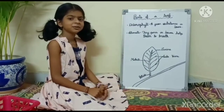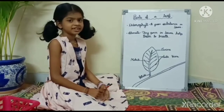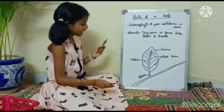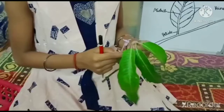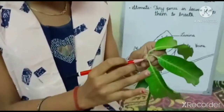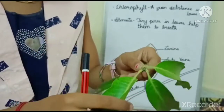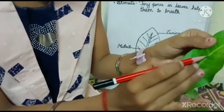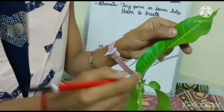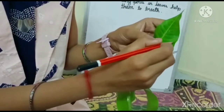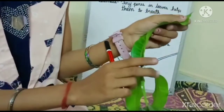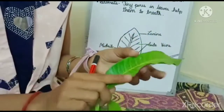Now I will show you everything practically. So, this is a leaf. Now I will show you the petiole. This is the petiole, and as you can see, it does connect the leaf to the stem. Now, this is the midrib — this thin line. These are the side veins. And this boundary of the leaf is called the leaf blade or the lamina.